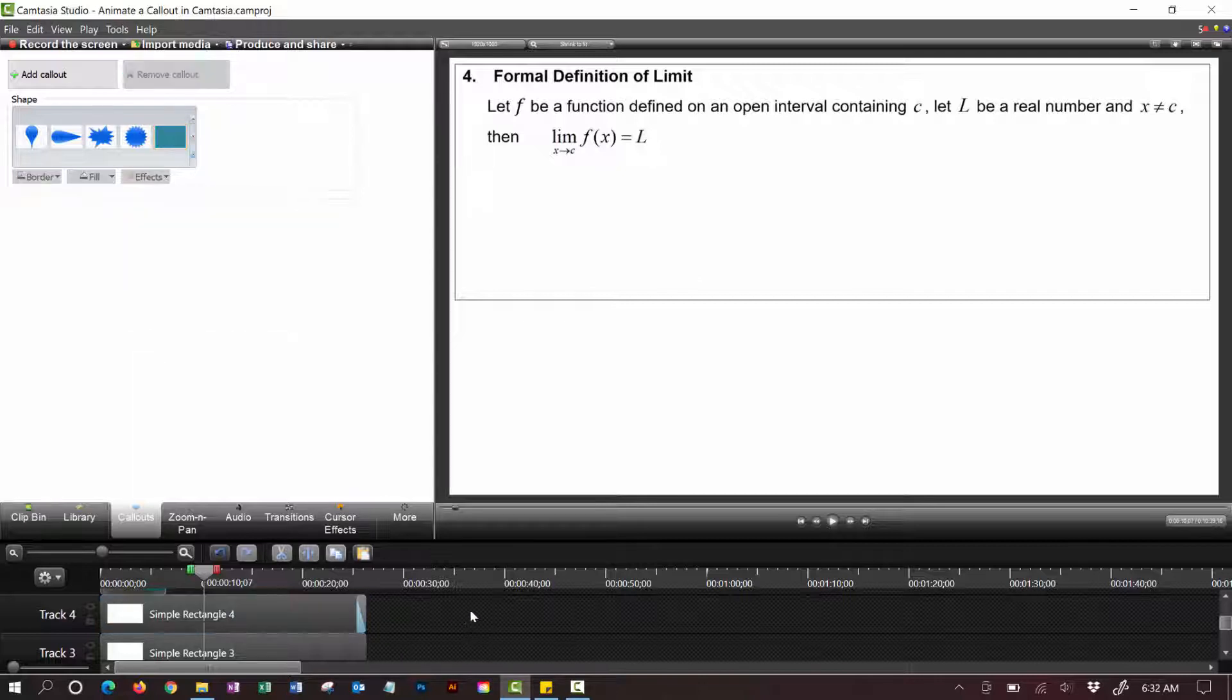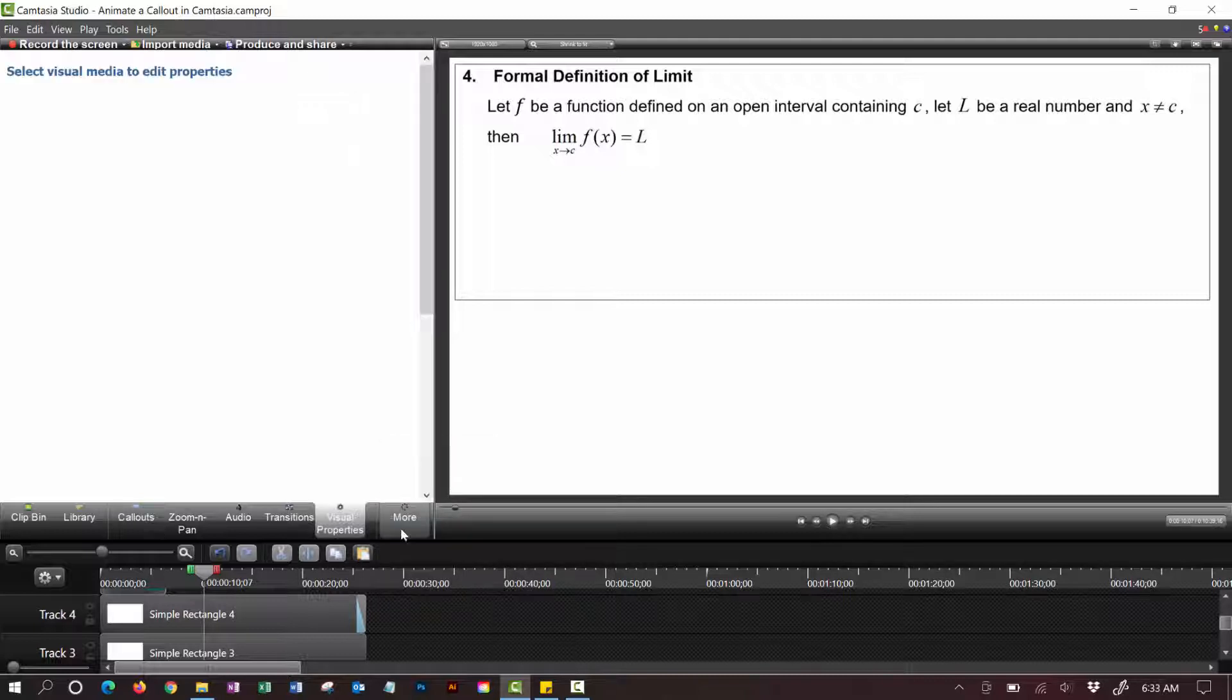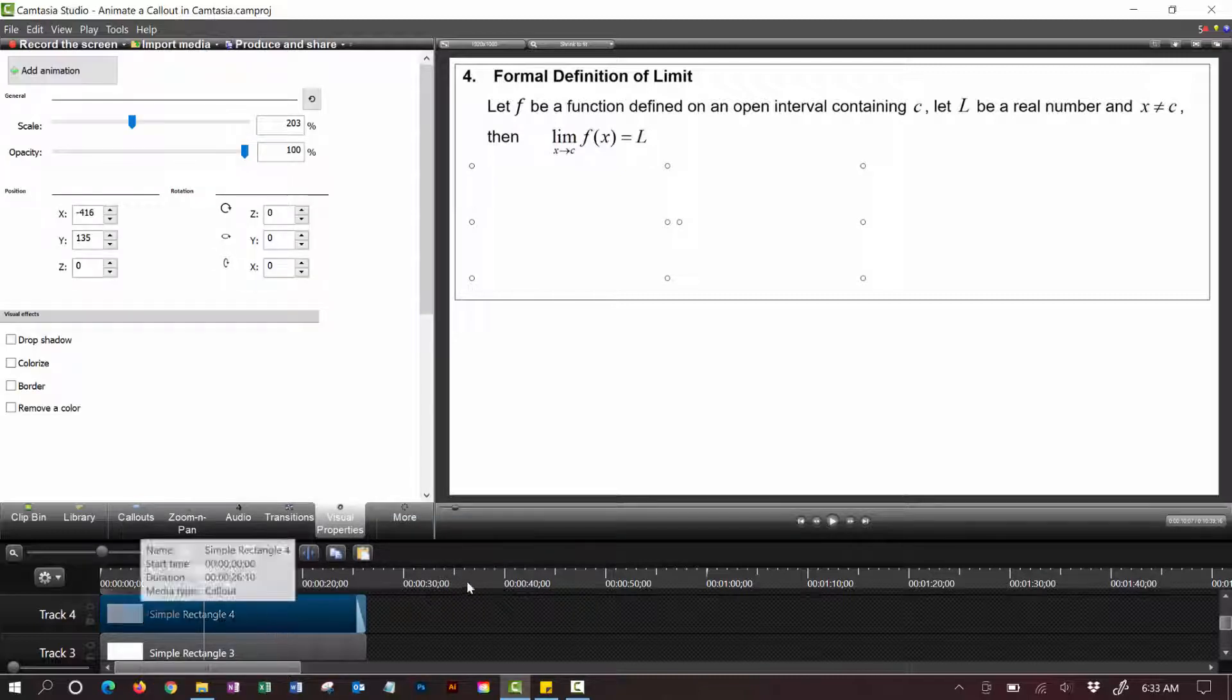Now the way you do that is you have to get to more click on visual properties select that rectangle that you want to animate and then come up here to the top and click add animation.